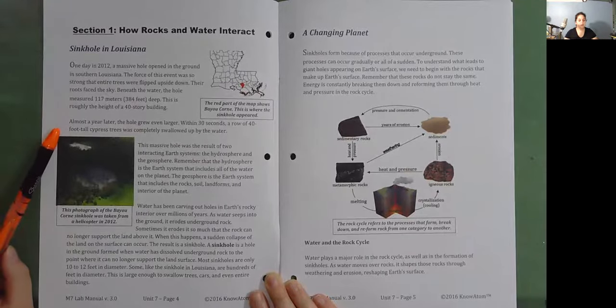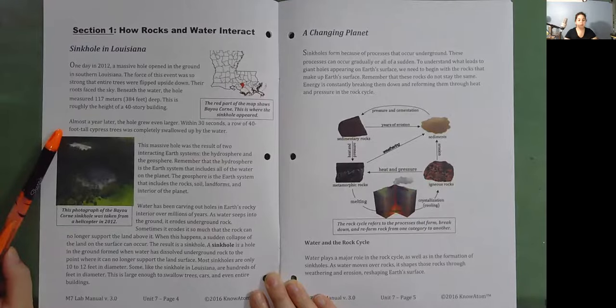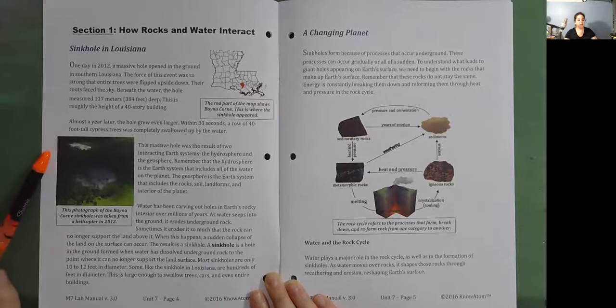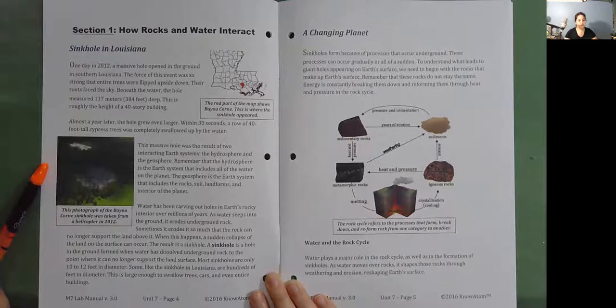Almost a year later, the hole grew even larger. Within 30 seconds, a row of 40-foot tall cypress trees was completely swallowed up by the water. This massive hole was the result of two interacting Earth systems, the hydrosphere and the geosphere. Remember that the hydrosphere is the Earth system that includes all of the water on the planet. The geosphere is the Earth system that includes the rocks, soil, landforms, and interior of the planet.